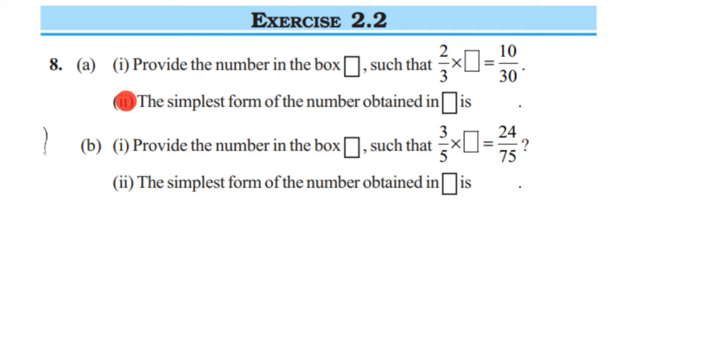The first one is: provide the number in the box such that 2 by 3 multiplied by that number will give you 10 upon 30. So let's solve the first one, this is the eighth question, first bit. What should we multiply 2 by 3 with to get 10 upon 30?